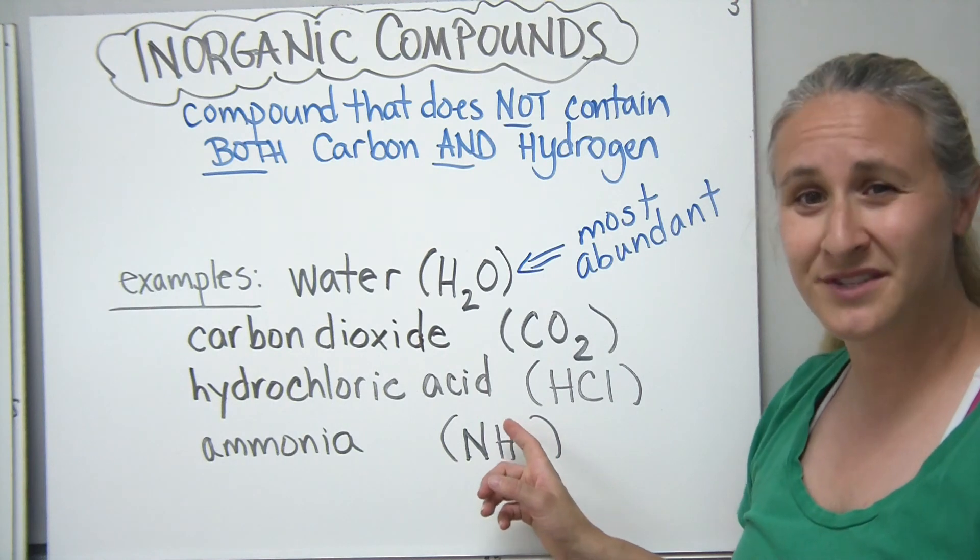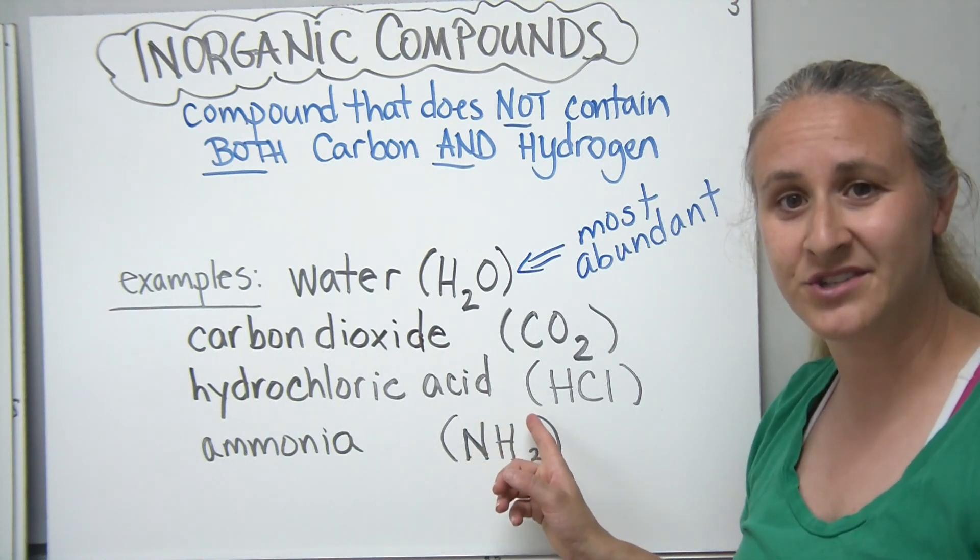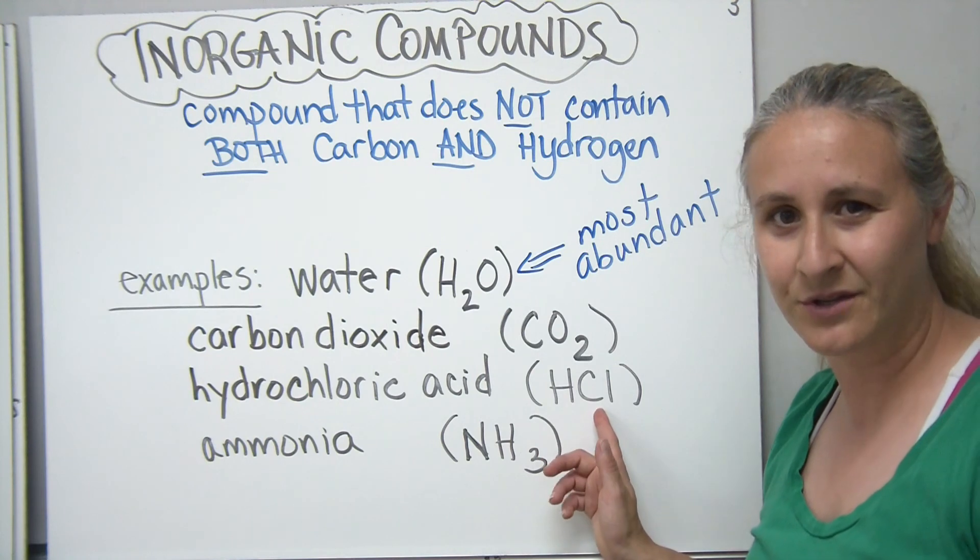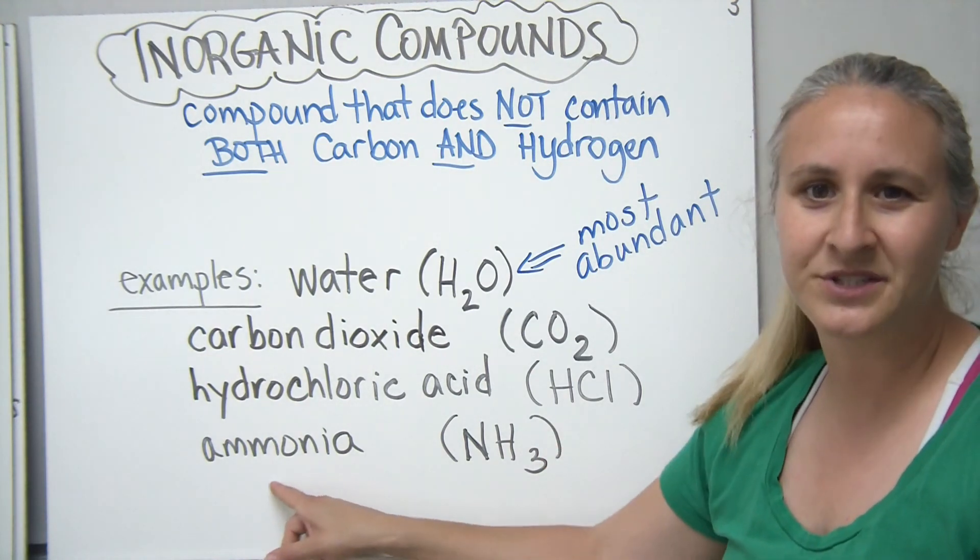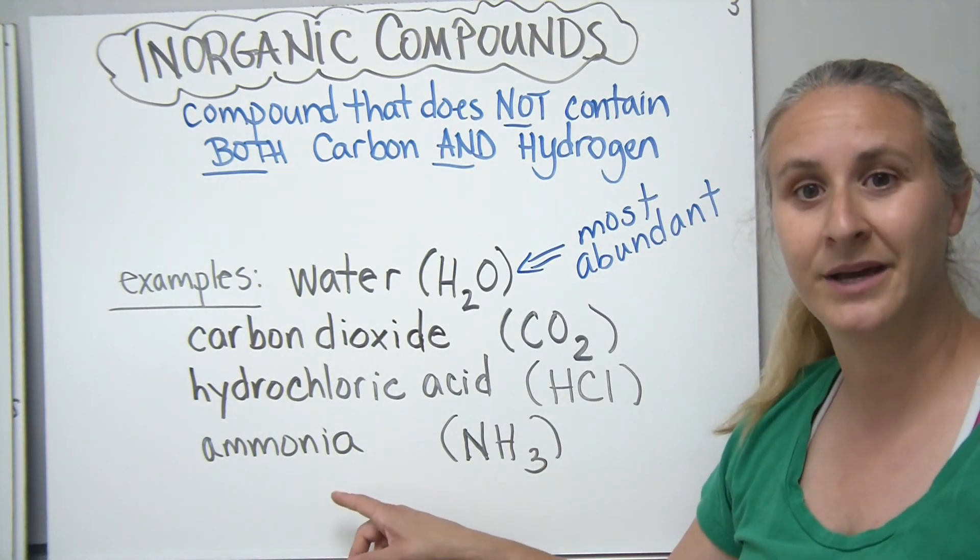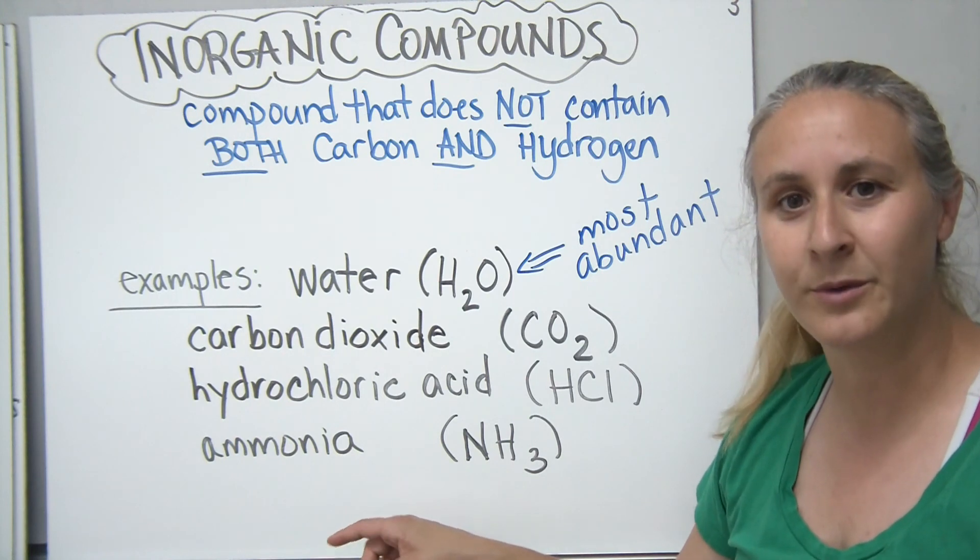Hydrochloric acid, which is found in the stomach to help with digestion, that's hydrogen and the Cl is chlorine. And then we have ammonia, which some of you might know as a cleaning compound, but we'll talk about it later on in the human body as well.